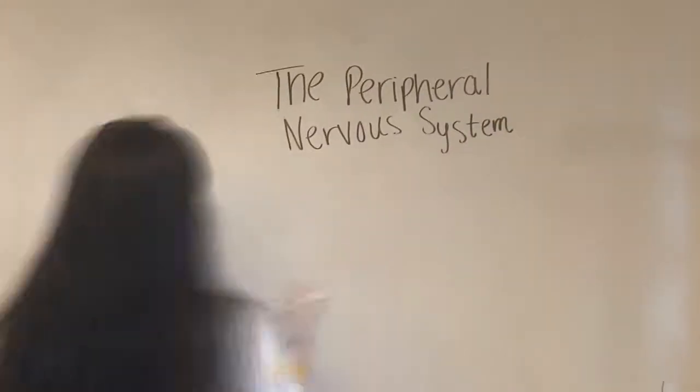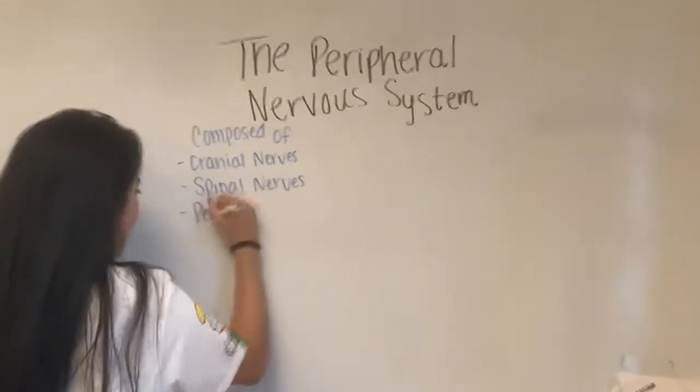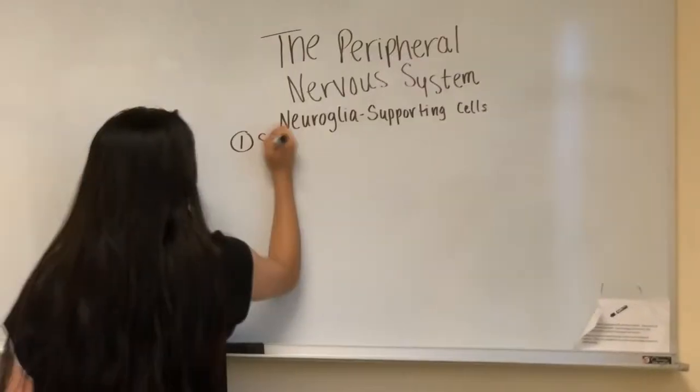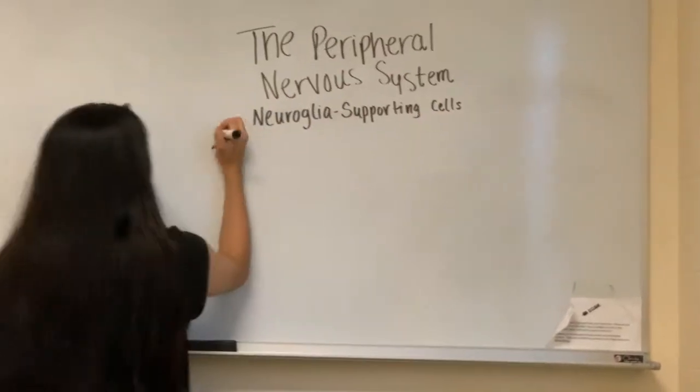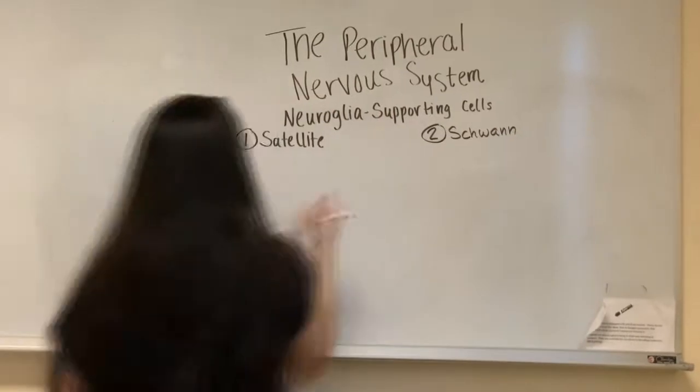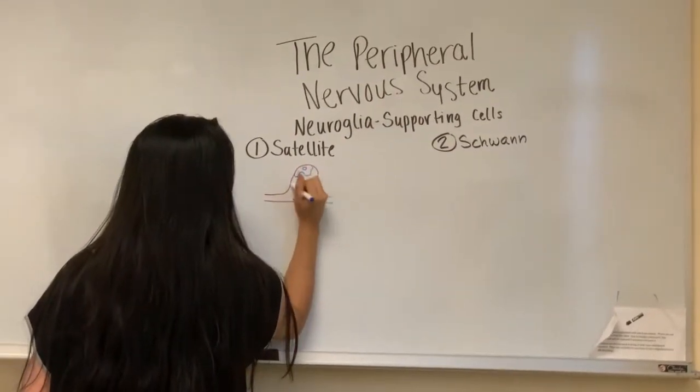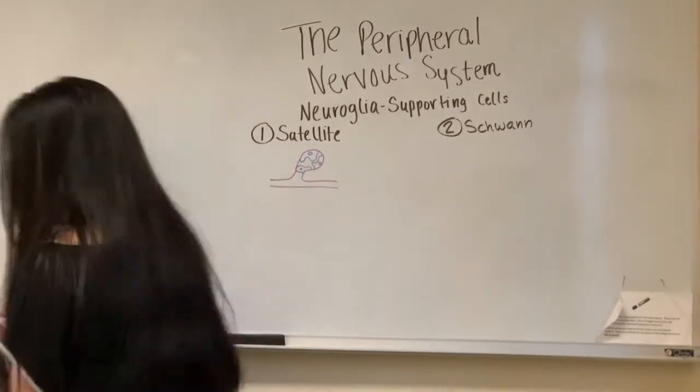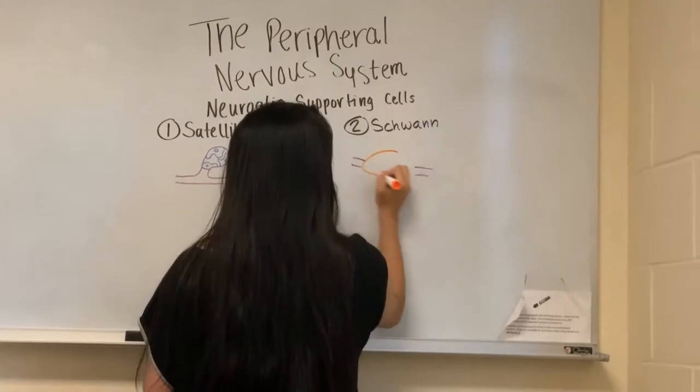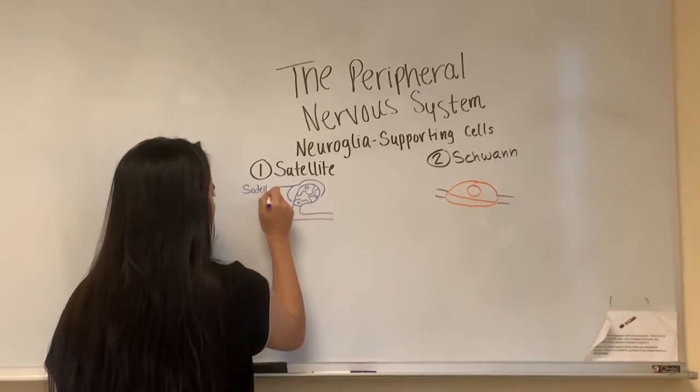The peripheral nervous system is composed of cranial nerves, spinal nerves, and sensory receptors, and have two functional subdivisions, sensory and motor. There are two types of neuroglia in the peripheral nervous system, satellite cells and Schwann cells. Satellite cells support neurons by wrapping around the cell body and Schwann cells make the myelin sheath in the peripheral nervous system. They surround all the nerve fibers and they are very important for regeneration of damaged peripheral nerve fibers.